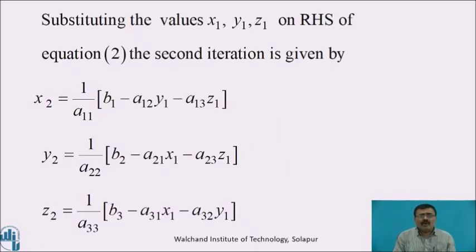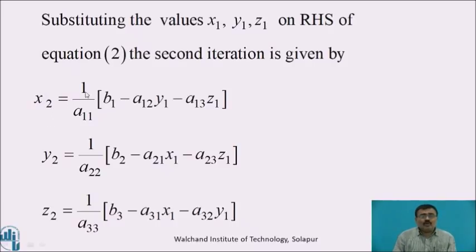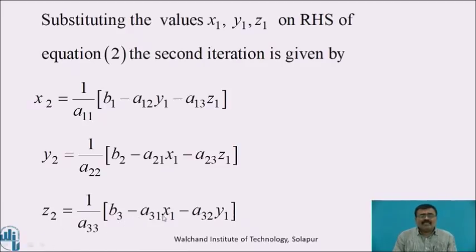Substituting the values of x1, y1, and z1 on the right-hand side of equation 2, the second iteration gives x2, y2, and z2: x2 = 1/a11 × (b1 − a12·y1 − a13·z1); y2 = 1/a22 × (b2 − a21·x1 − a23·z1); z2 = 1/a33 × (b3 − a31·x1 − a32·y1).